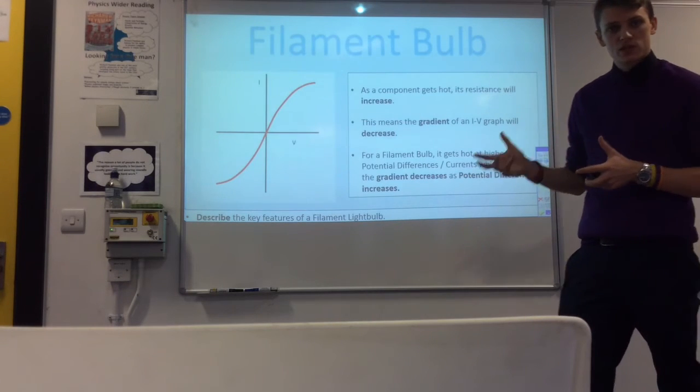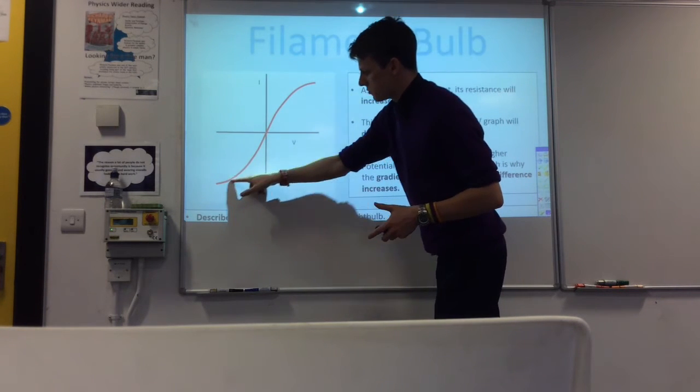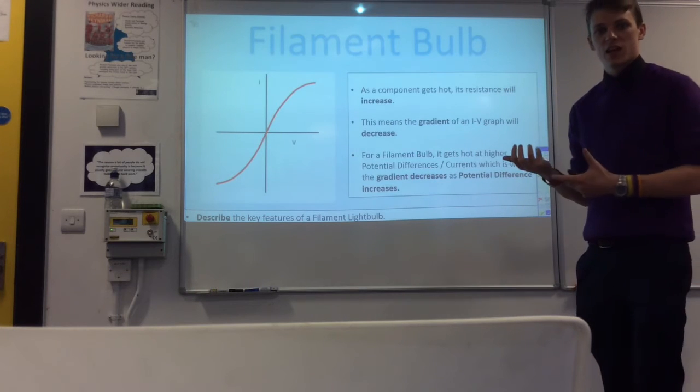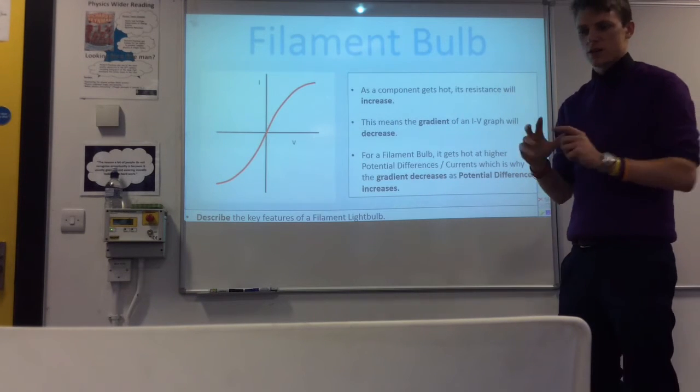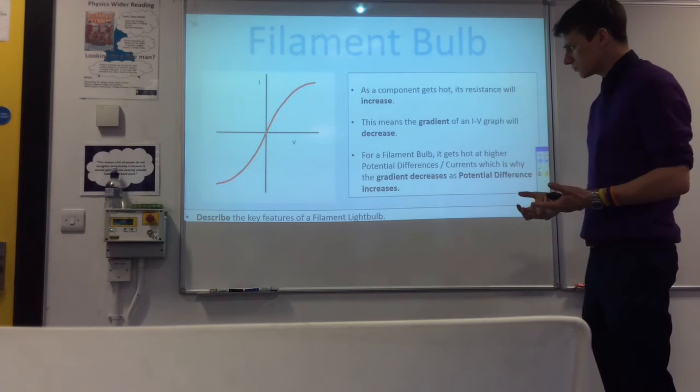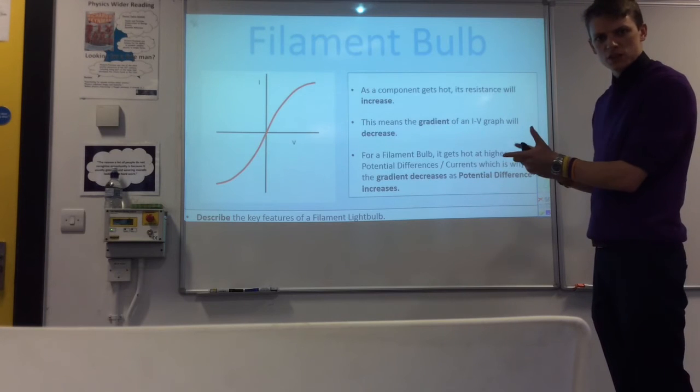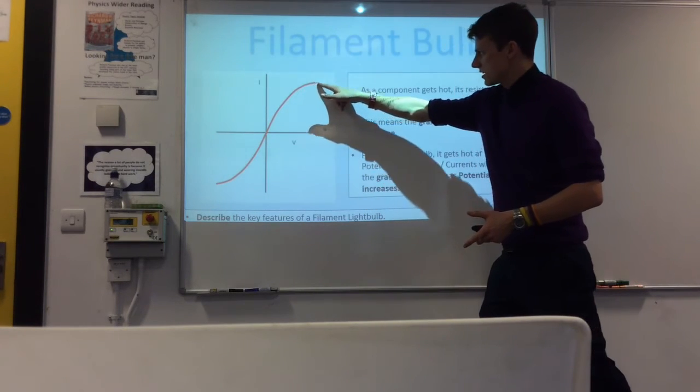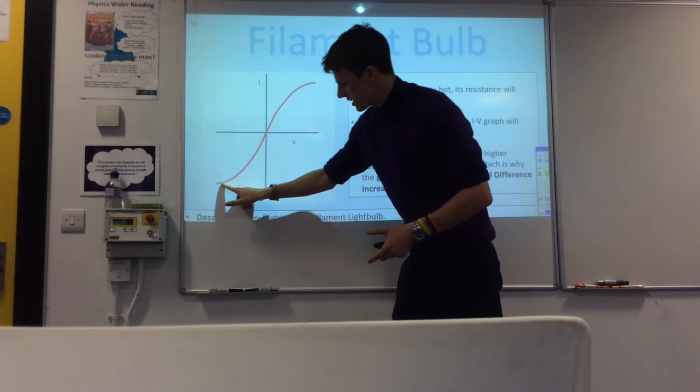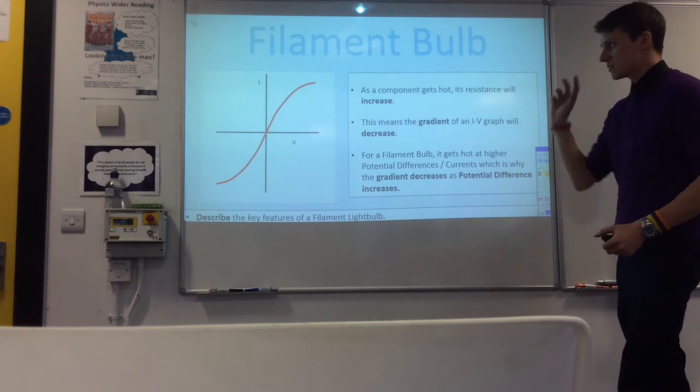A filament bulb is slightly different. If you see in the central section it's very much like an ohmic conductor, but the key features of filament bulbs are these two sections at the top. And that's due to the fact that the resistance of the component will increase if it gets hot. It means the particles in whatever the object is get more in the way of the electrons as a way of thinking about it if they're hotter and have more energy. So if the resistance increases that means the gradient of the line decreases because remember they were inversely proportional to each other. So you can see here the gradient's decreasing which means the resistance is increasing at those points because it's getting hot and we get the same in the negative direction as well here. But in the central section it's very much like an ohmic conductor. That's a filament bulb.